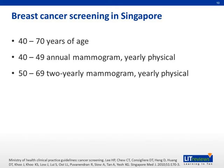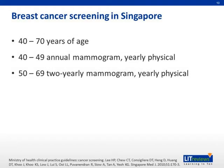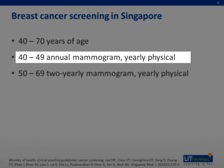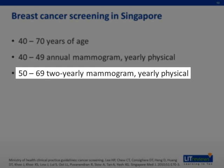In the Singaporean context, screening for breast cancer starts in females from the age of 40 till the age of 70. All women between those ages should have a physical examination annually, in addition to monthly self-examination. From the age of 40 to 49, women should have a yearly mammogram, which then becomes two-yearly upon reaching the age of 50.